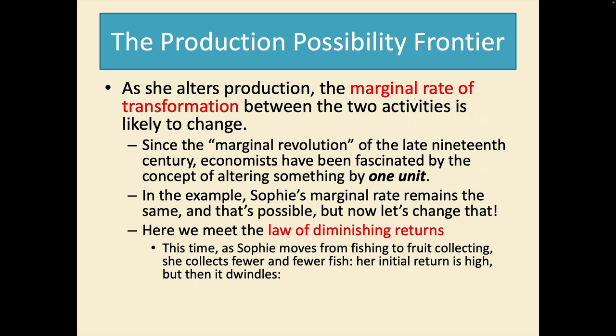So here we also meet what's called the law of diminishing returns. This time as Sophie moves from fishing to fruit collecting she collects fewer and fewer fish. Her initial return as she goes fruit picking is high but then it's going to dwindle. So this can be shown with a curved graph.